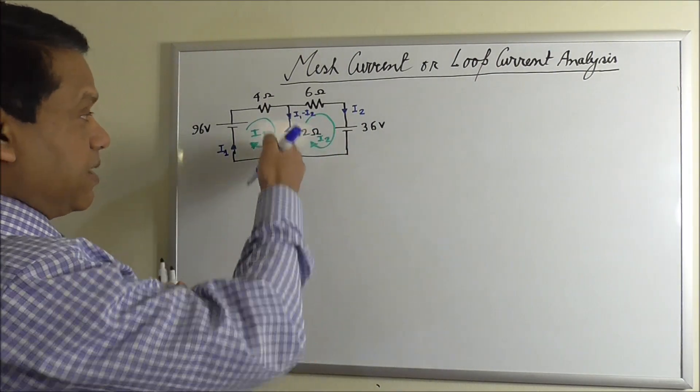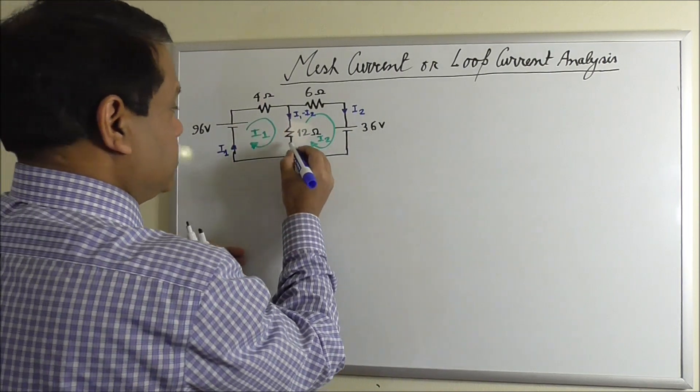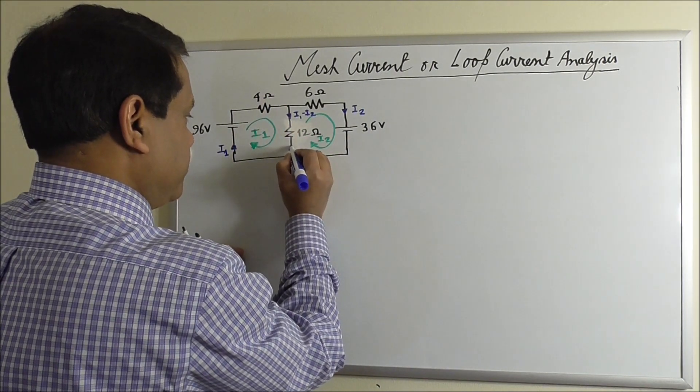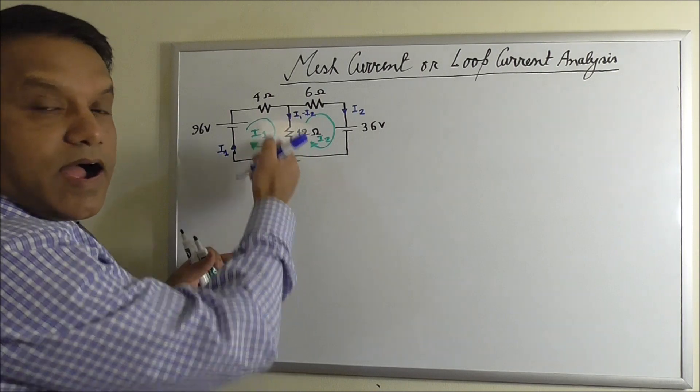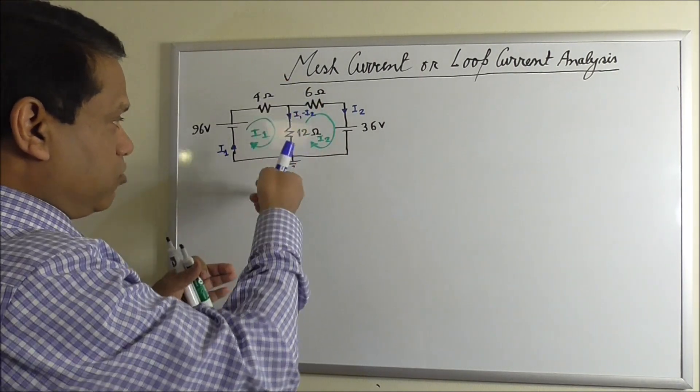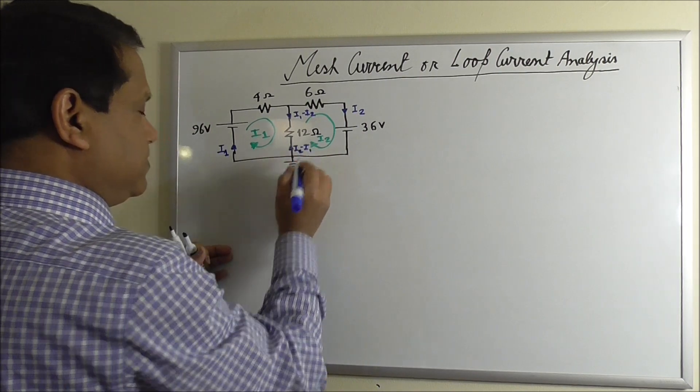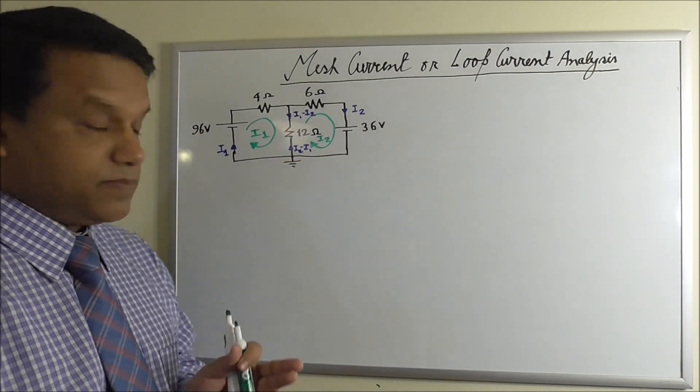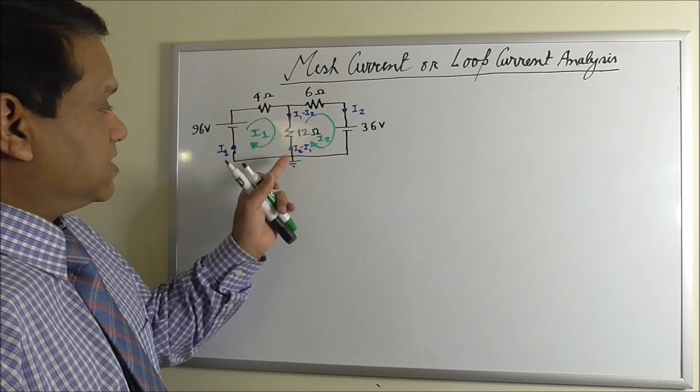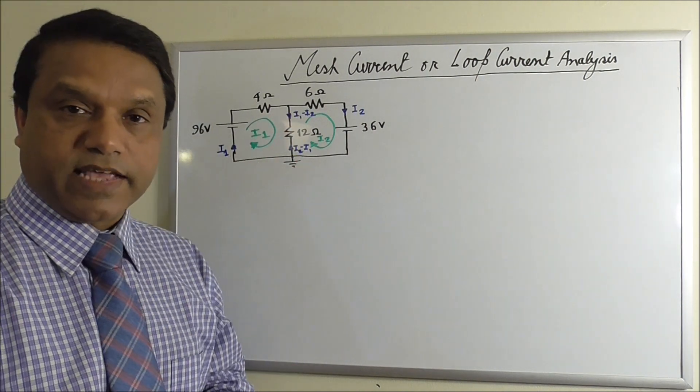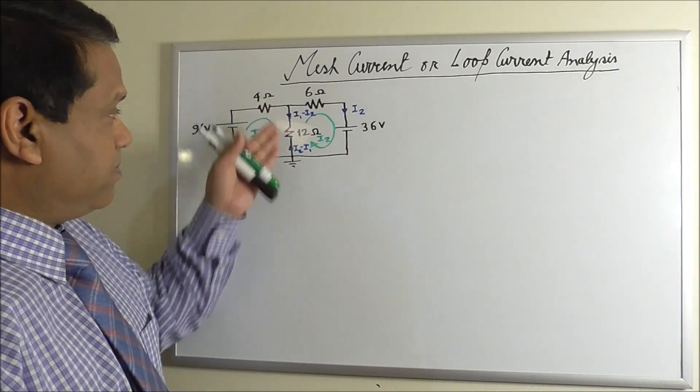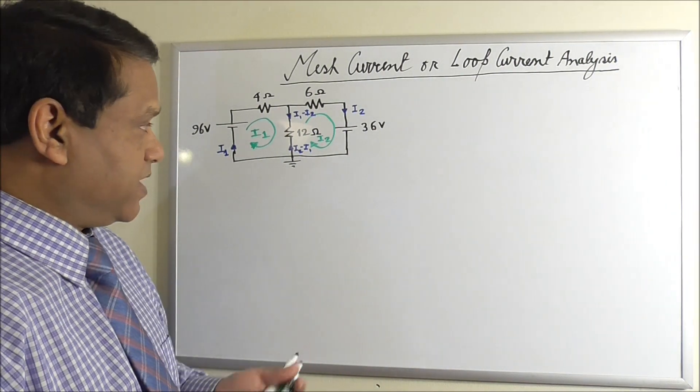And if you assume the current is upward in this branch, then this current will be I2 is upward and I1 is downward. It will be I2 minus I1. And this makes perfect sense because I1 minus I2 is just the opposite of I2 minus I1, and they have opposite directions. So this is fine.